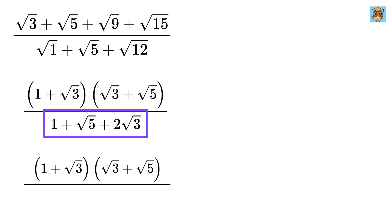For the denominator, we rearrange the terms 1 plus square root of 5 plus 2 times square root of 3.